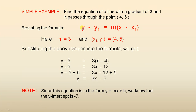Restating the formula: y minus y one equals m outside of x minus x one. Here m equals three because the gradient is three, and x one y one is four five, so x one is four and y one is five.